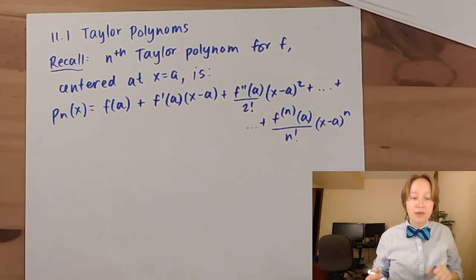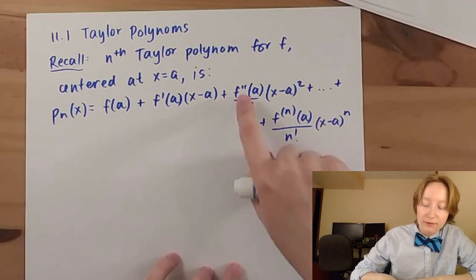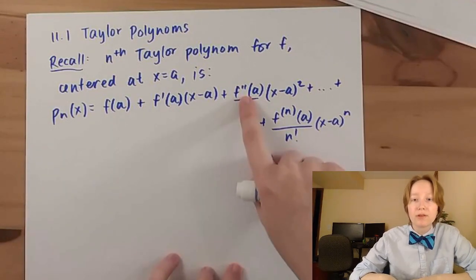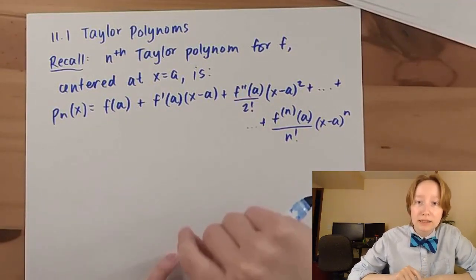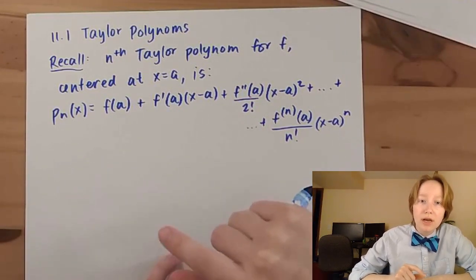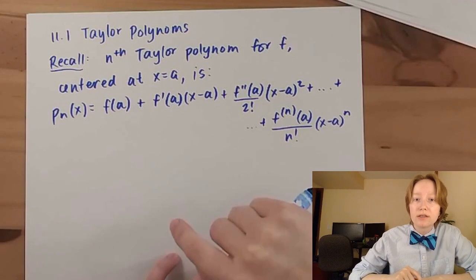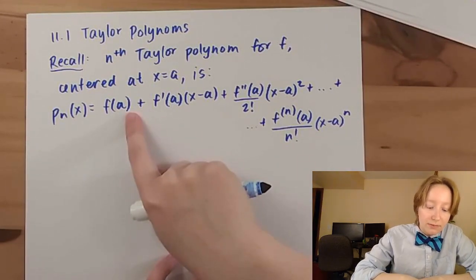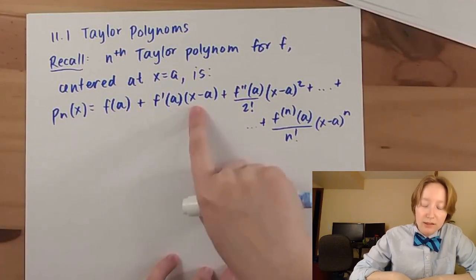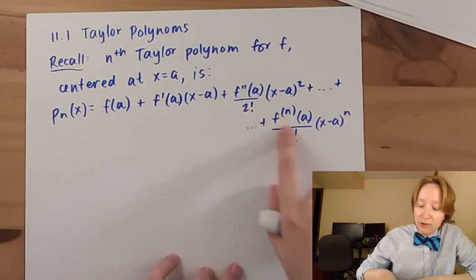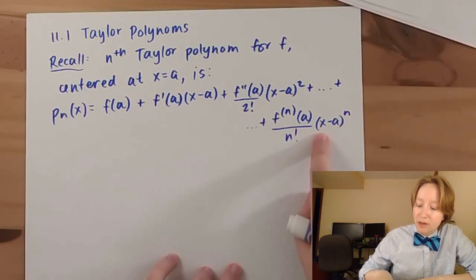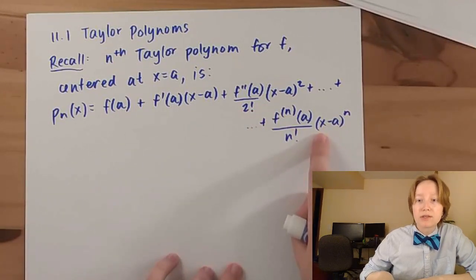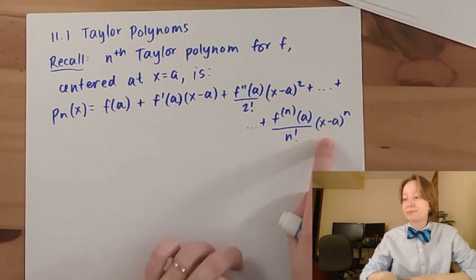Notice that f(a), f'(a), f''(a) are all constants, and the only variable terms are the polynomial terms: x to the 0th power, x to the first power, x to the second power, up to x to the nth power. So this is an nth degree polynomial.